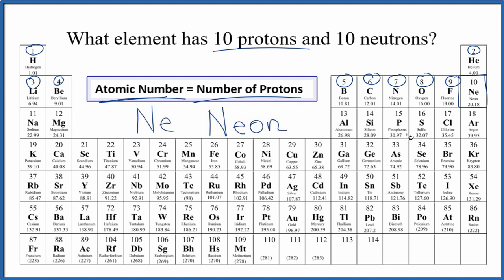When we're looking at elements on the periodic table, the atomic number, the number on top, is the unique number. Neon will always have 10 protons, no more, no less.